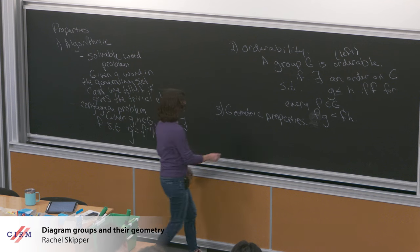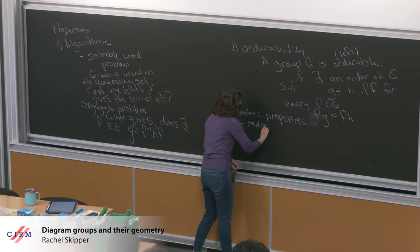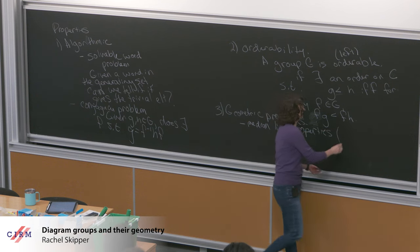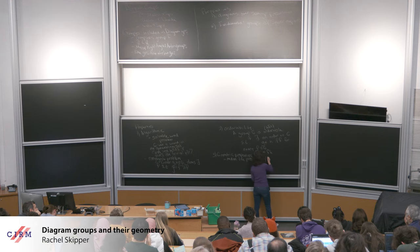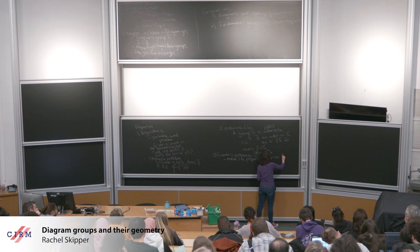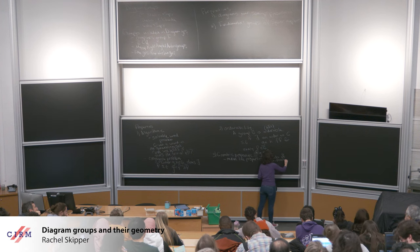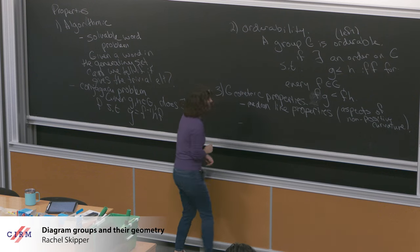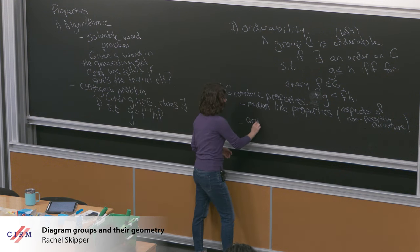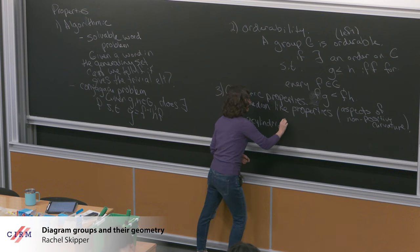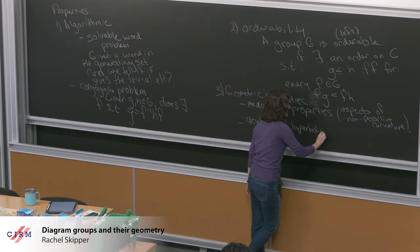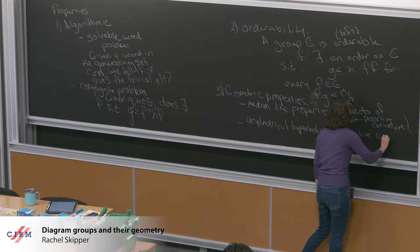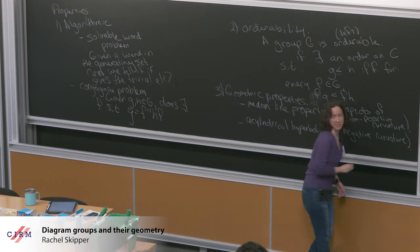The geometric properties you'll see more about tomorrow include median-like properties, which you can think of as aspects of non-positive curvature. And sometimes these groups also have negative-curvature-like properties, such as acylindrical hyperbolicity, which you can think of as some aspect of negative curvature.